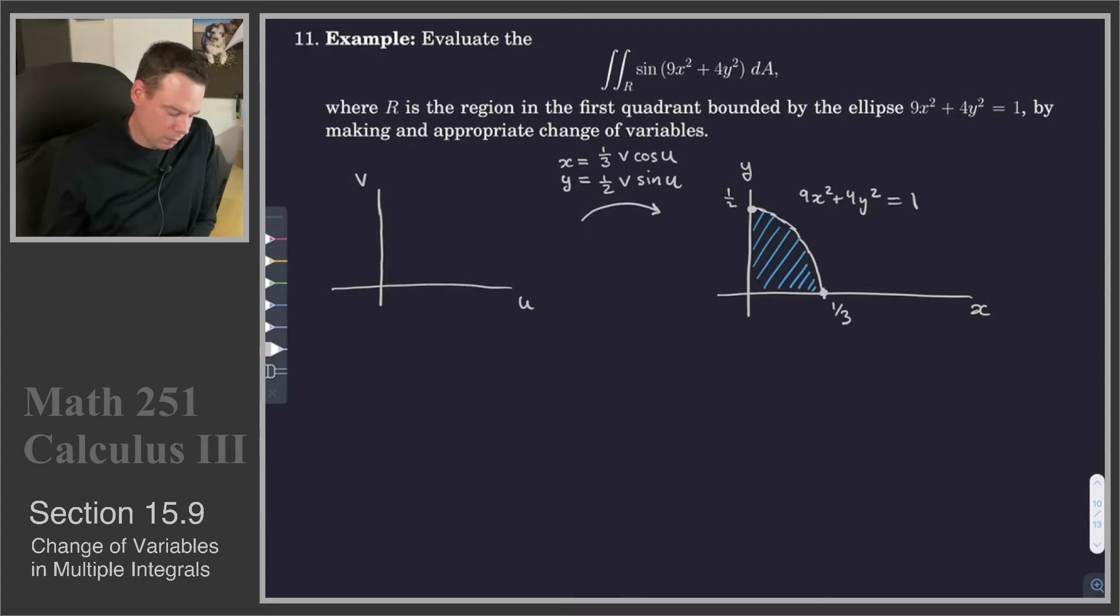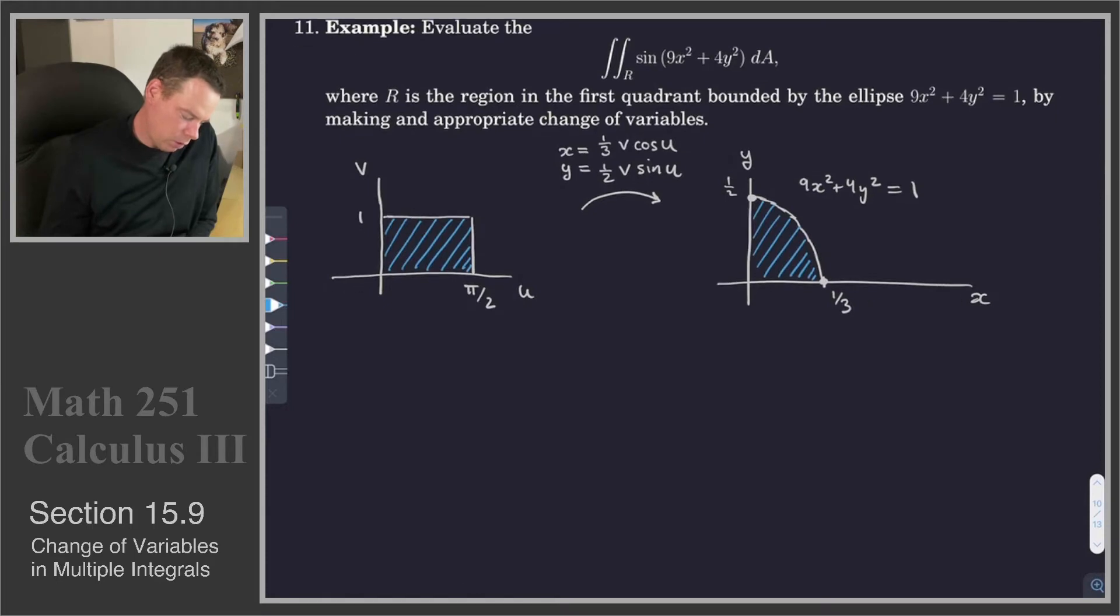This is actually going to give me, when v is equal to 1 in both of these cases, it's going to give me the ellipse. And when v is smaller than 1, it gives me points inside the ellipse. So what v ranges over is from 0 to 1, and what u ranges over is from 0 to π/2. And so that's the region that's going to give rise to that quarter of an ellipse. So there's our change of variables.